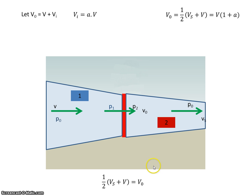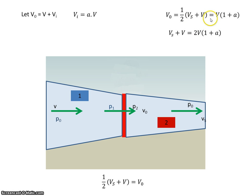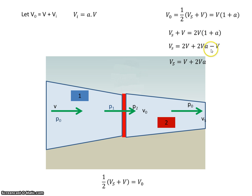We saw that the velocity through the disk was half the slipstream plus the freestream, and I also know that this velocity was equal to V times (1 + A), so it's the freestream velocity plus the induced velocity, which is A·VI. Therefore, multiplying across by 2, and bringing V to one side and multiplying it all out, we get an expression for the slipstream velocity, which reduces to: the slipstream velocity is equal to the freestream velocity multiplied by (1 + 2A).